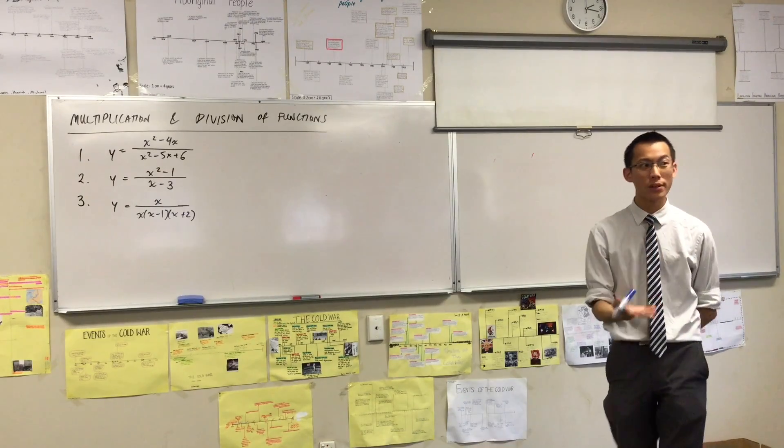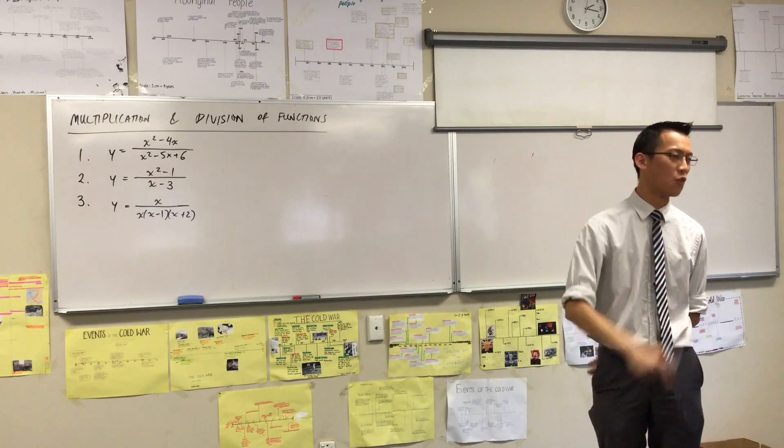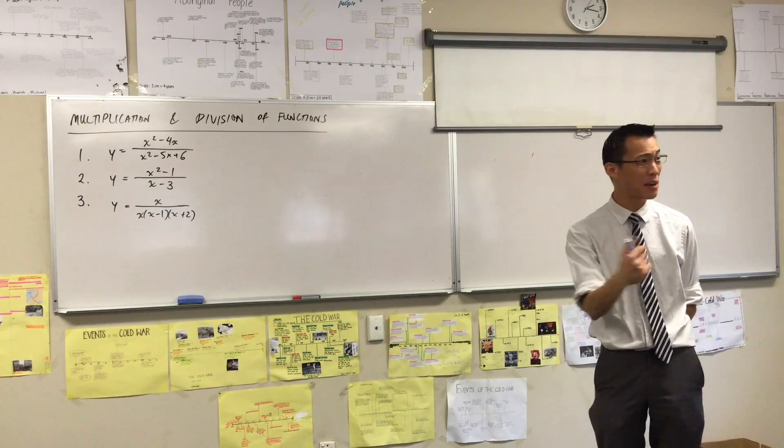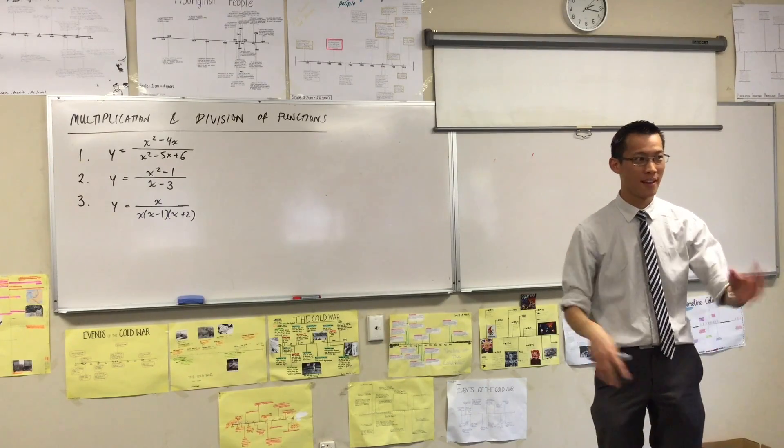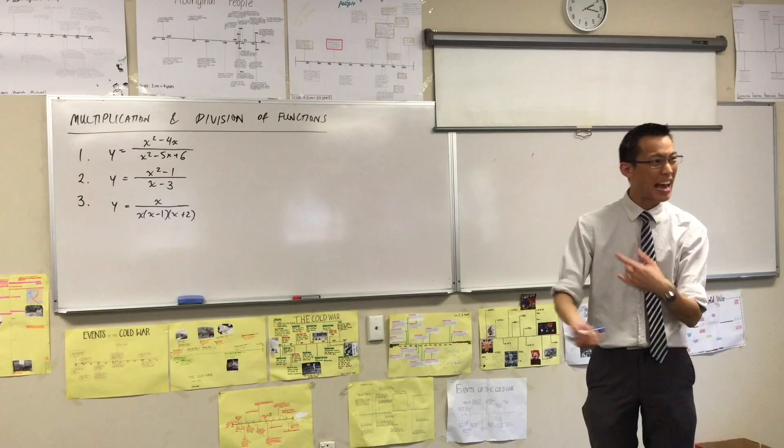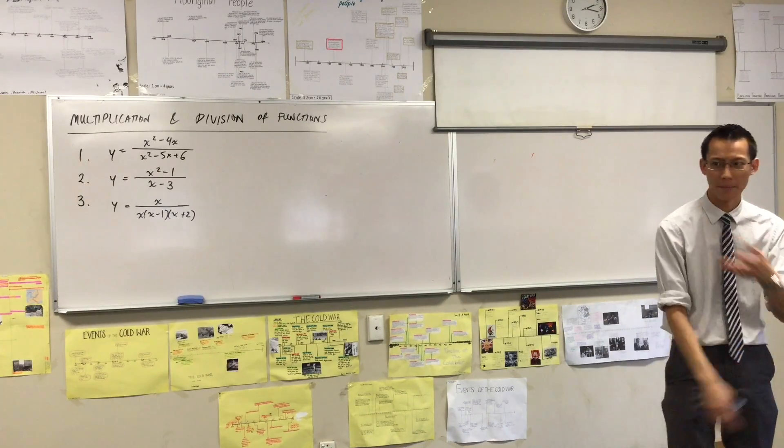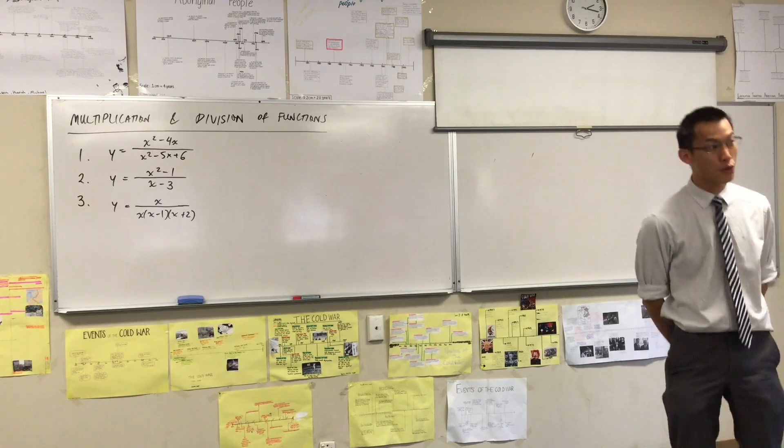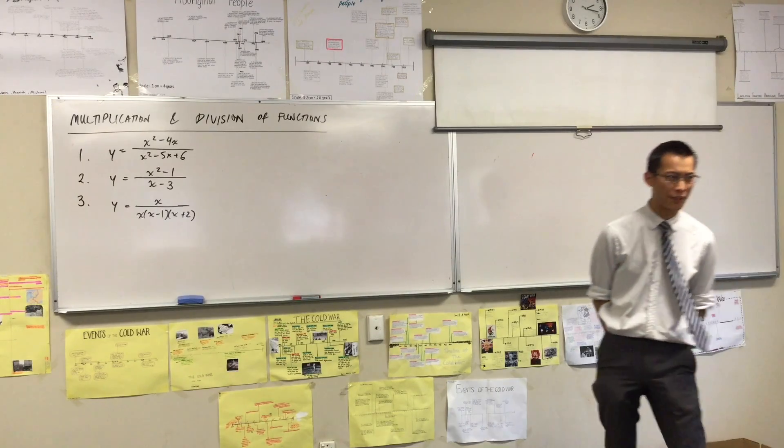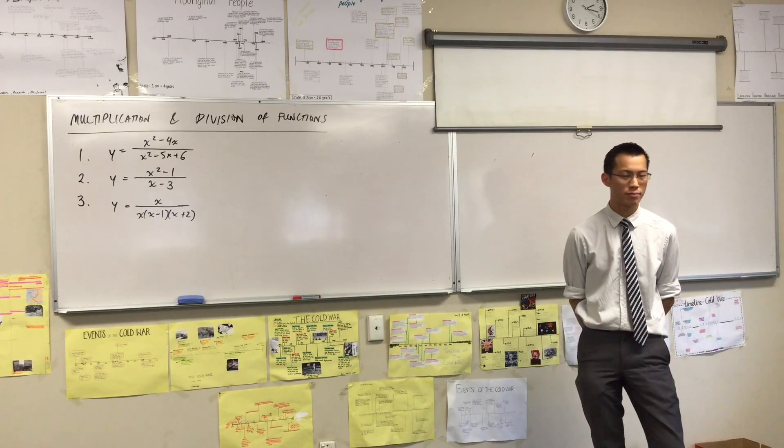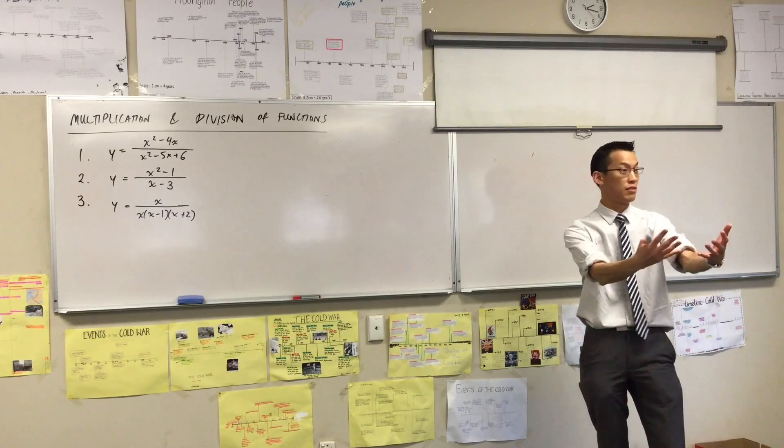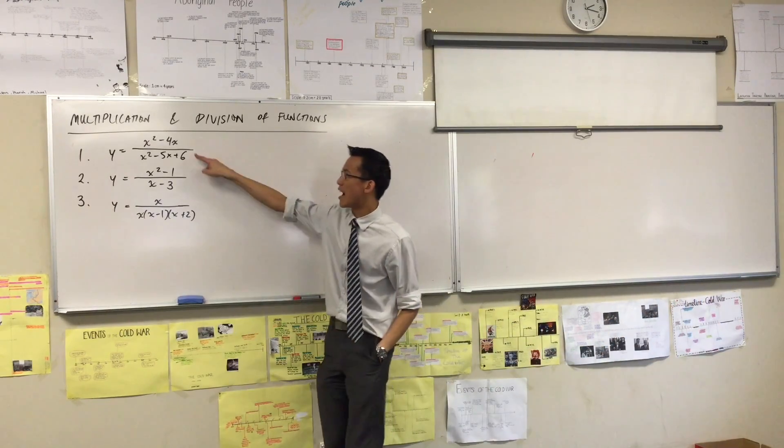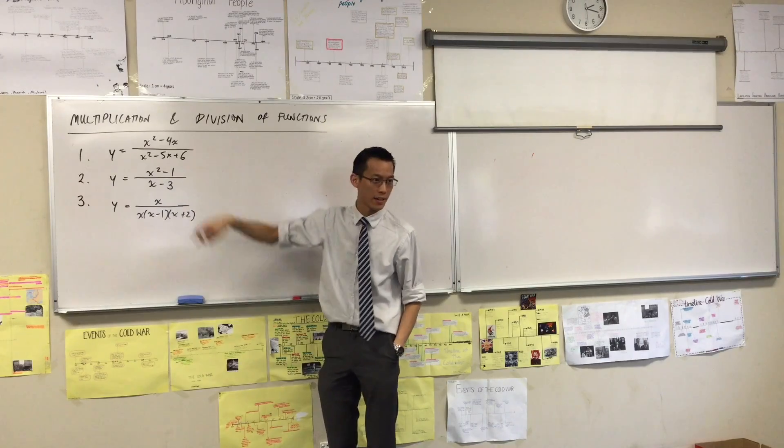These are called rational functions. Can anyone tell me why we call them rational functions? What's rational mean? Think back to our first lesson when we're talking about complex numbers and real numbers and rational numbers, a kind of number. What are rational numbers? They're like fractions and stuff, right? Like two-thirds and a half and three and five-eighths or something like that. Those are rational numbers. These are rational functions because they are ratios between different functions.